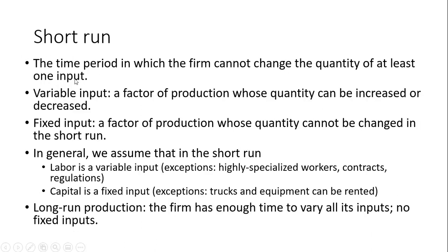The short run is the period of time in which a firm cannot change the quantity of at least one input in the production process. We have a couple different types of inputs to consider. A variable input is a factor of production whose quantity can be increased or decreased. A fixed input is a factor of production whose quantity cannot be changed in the short run. In general, we assume that in the short run, labor is a variable input — there's enough time to add workers or reduce your workforce. But capital, at least in the short run, is going to be fixed. It takes a long time to build a new building, a warehouse, or expand a restaurant. In general, in standard production theory, we assume labor is variable and capital is fixed.